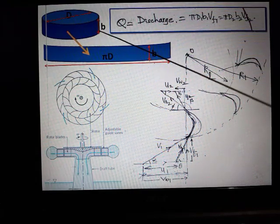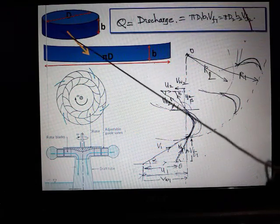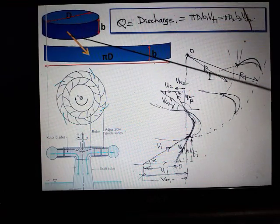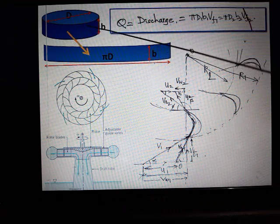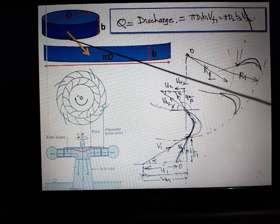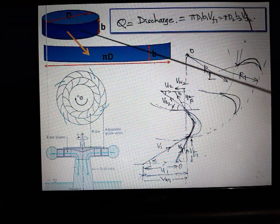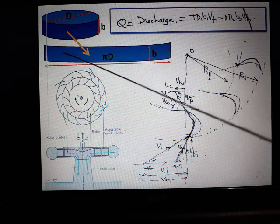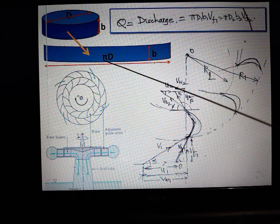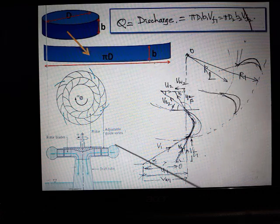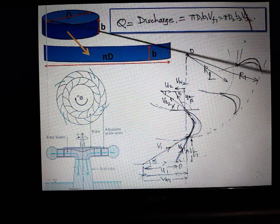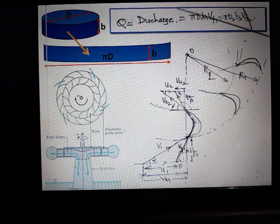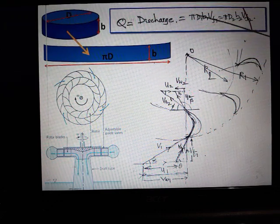The area through which the water enters will be the cylindrical surface area. If I want the cylindrical surface area, I have to just open this up. The circumferential length becomes πD, and the width becomes B. Because of that, the cross-sectional area through which the water enters becomes πD1B1. The discharge becomes πD1B1 at the entry times the velocity of flow.